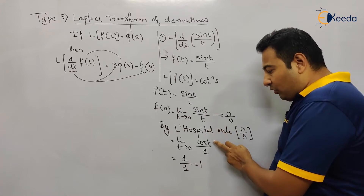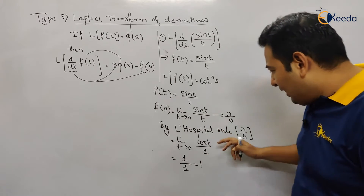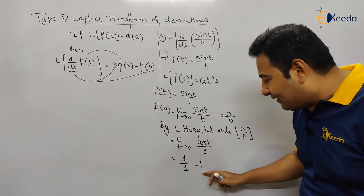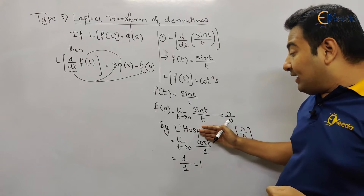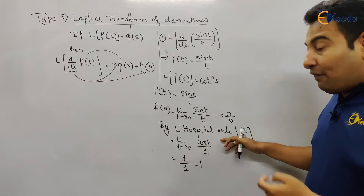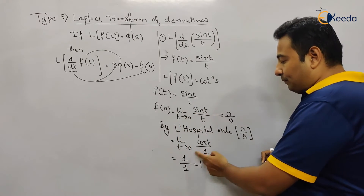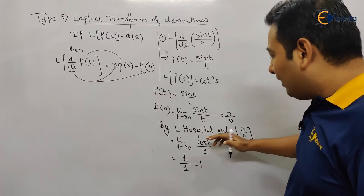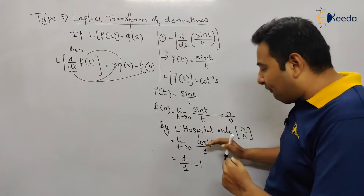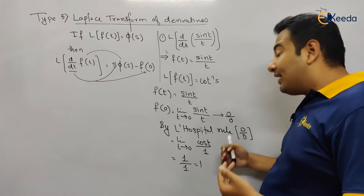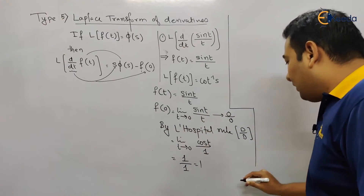After applying L'Hôpital's rule, if we again get 0/0, the rule must be repeated until we get a valid answer. Here, applying L'Hôpital's rule once gave the answer as 1, so we stop. If we hadn't gotten a valid answer, we would repeat L'Hôpital's rule.